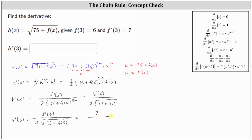Performing the substitution, we have seven divided by the product of two and the square root of the quantity 75 plus six. Since 75 plus six equals 81, this gives us seven divided by two times the square root of 81. The square root of 81 is nine, giving us seven divided by two times nine, which equals 7/18 for h prime of three.